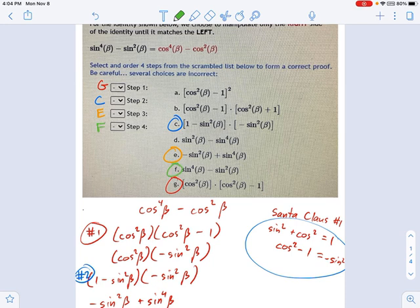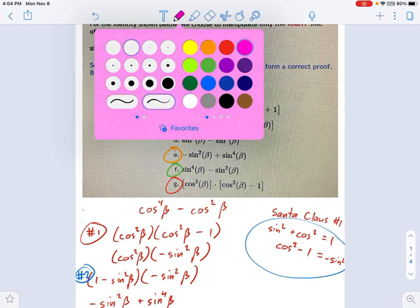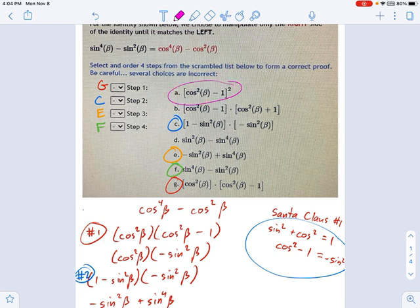This is the order that I would place these steps: G, C, E, F. If you look over the ones we didn't use, these guys, they are just complete distractors. Sometimes they're off by a plus or minus sign, sometimes they have nothing to do with the problem, although that's rare. Sometimes it's based on incorrect factoring.